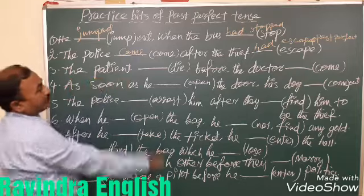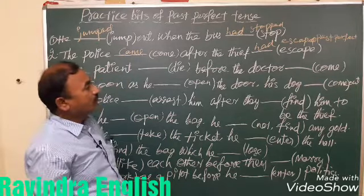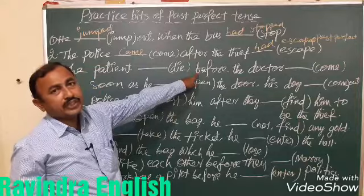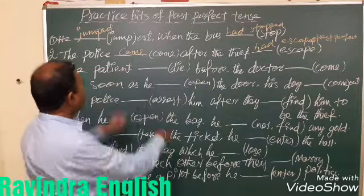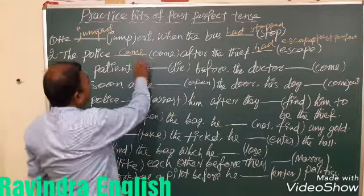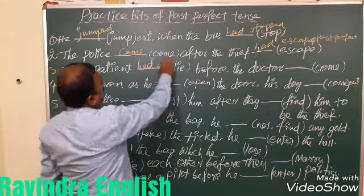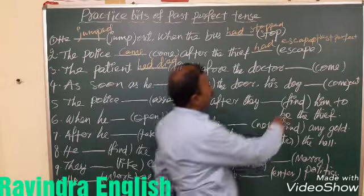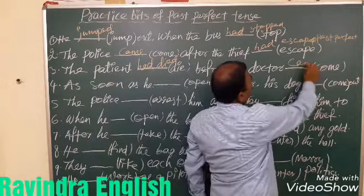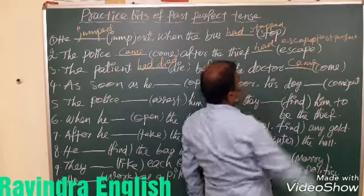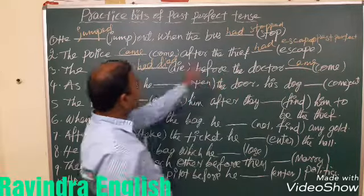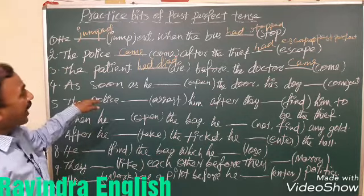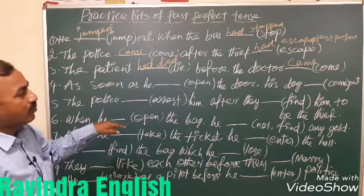The next example: 'The patient died before the doctor come.' The correct form is: 'The patient had died before the doctor came.' The earlier action — the patient dying — goes in past perfect tense.